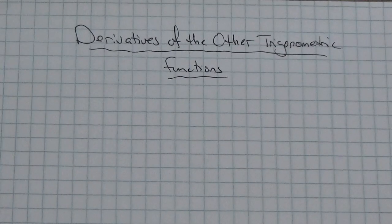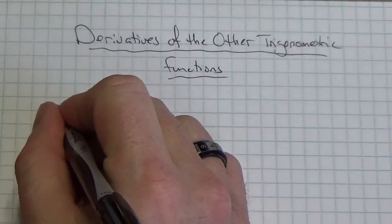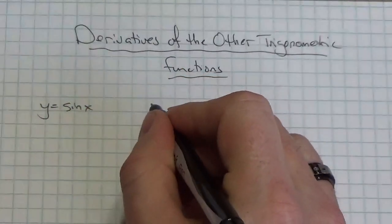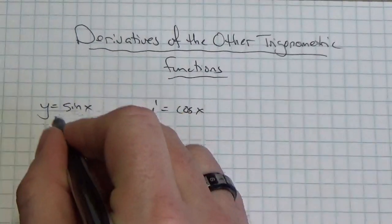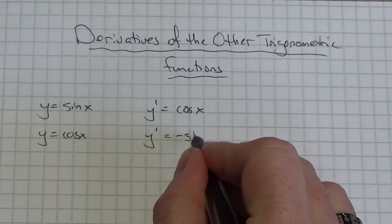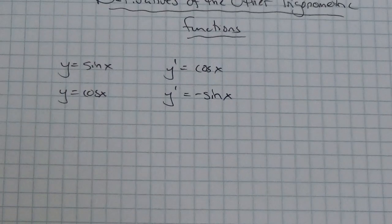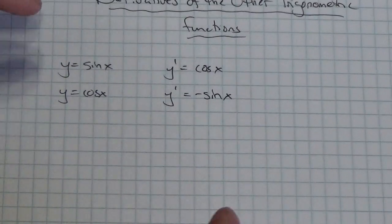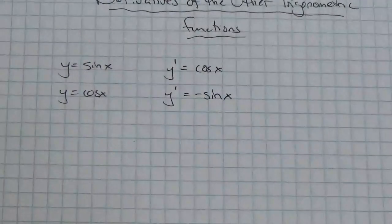In a previous video, we looked at the derivatives of sine and cosine. If y is equal to the sine of x, then we know that the derivative is going to be the cosine of x. And if y is equal to the cosine of x, we know that the derivative is going to be negative sine of x. So now the question is, what are the derivatives of all the other trig functions? As I suggested in that previous video, your experience probably suggests that a lot of the trig that we do is based on the behavior of these two functions.